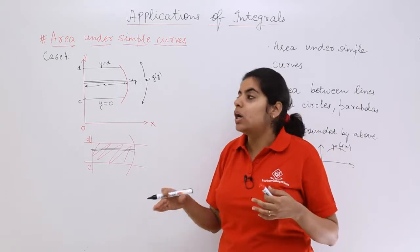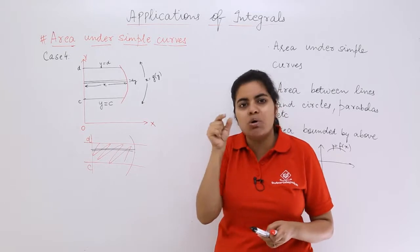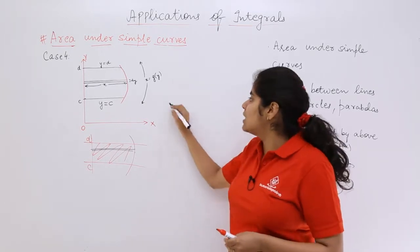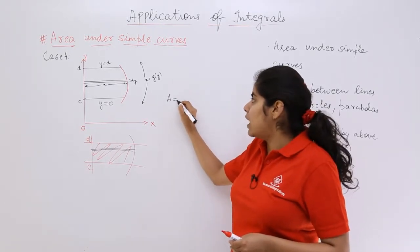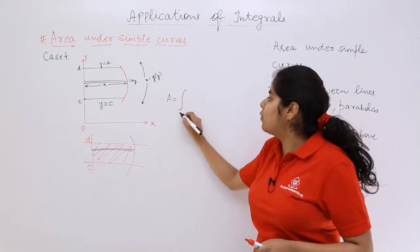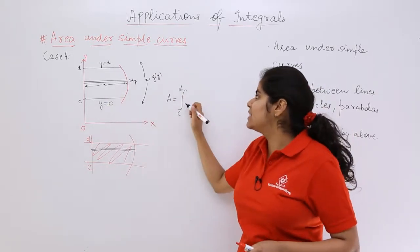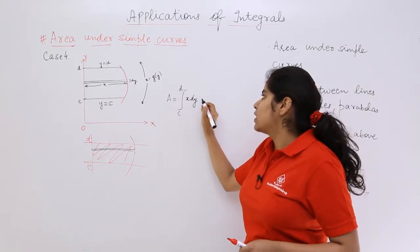What about the whole of the region wherein we have infinitely many small rectangles? The answer to the area would be the integration from c to d, because it is towards the positive direction, so from c to d, area of one rectangle x dy, so x dy.